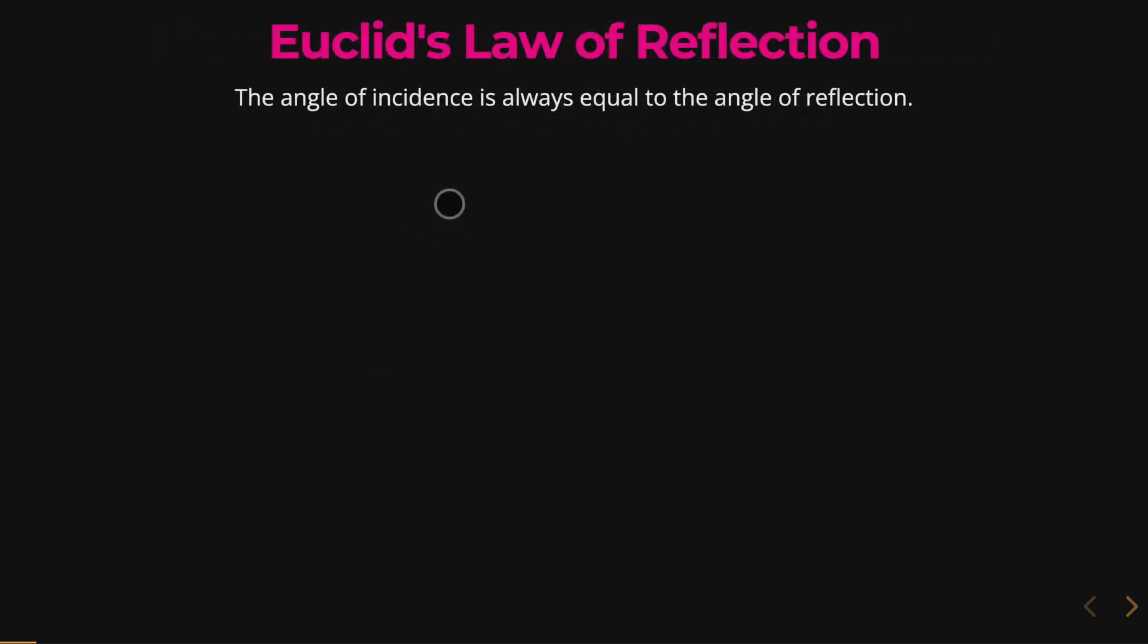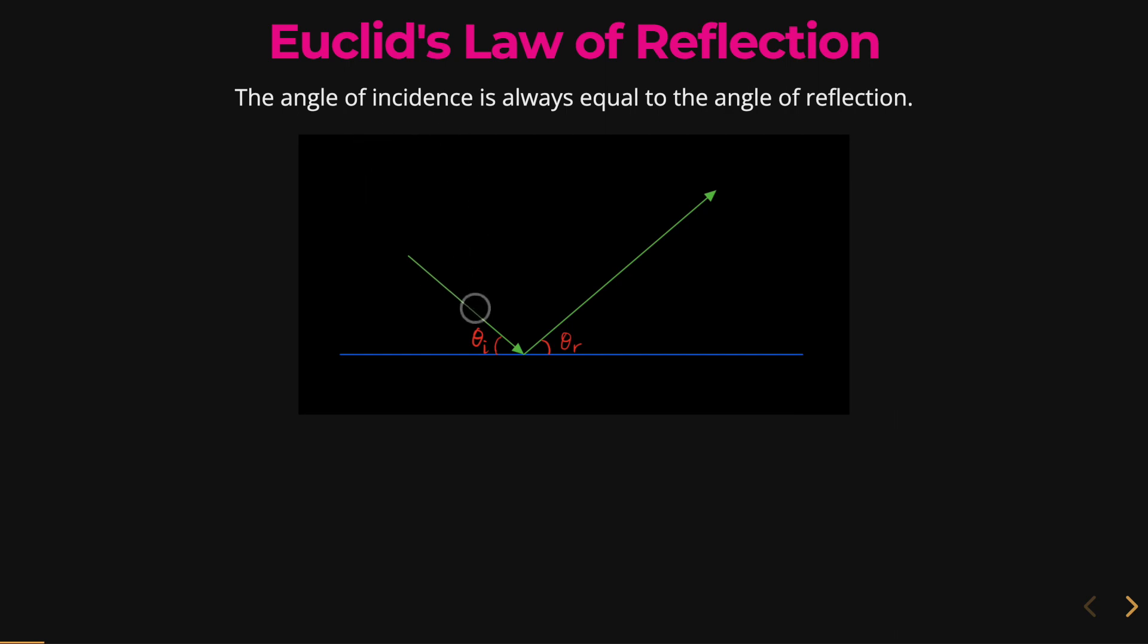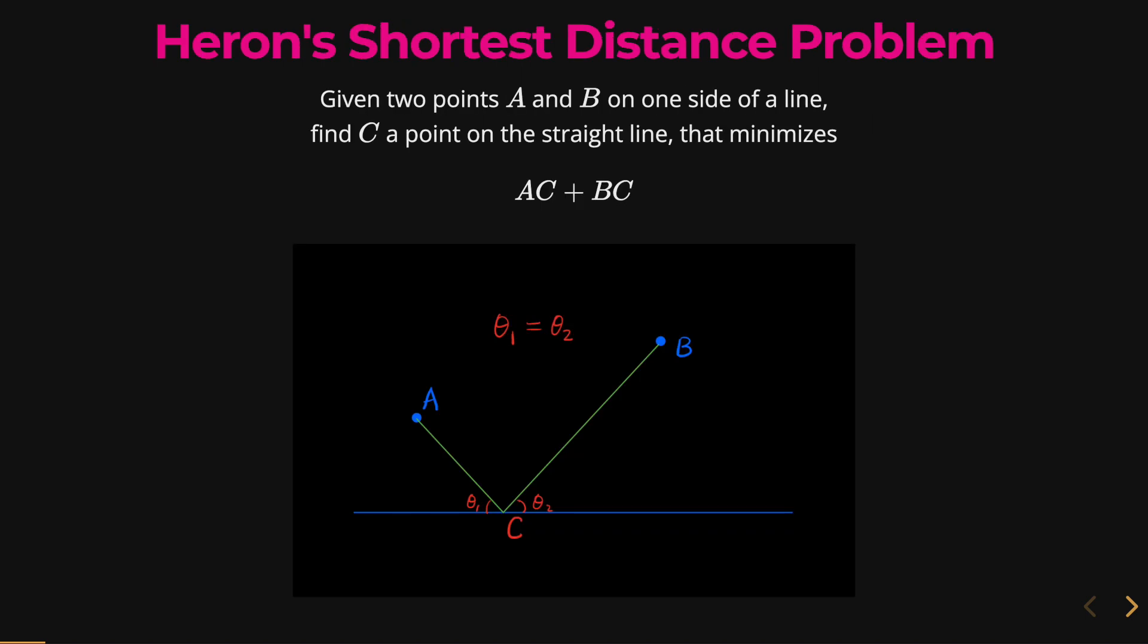So to help us out with this, we can think about Euclid's law of reflection. And this basically states, regarding the reflection of light, that the angle of incidence is always equal to the angle of reflection. So that condition will apply here for Heron's shortest distance problem. If you want to achieve the minimum, then the two angles must be equal to each other. So as you can see here, theta1 is equal to theta2.